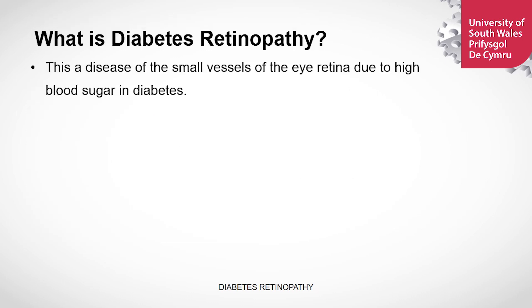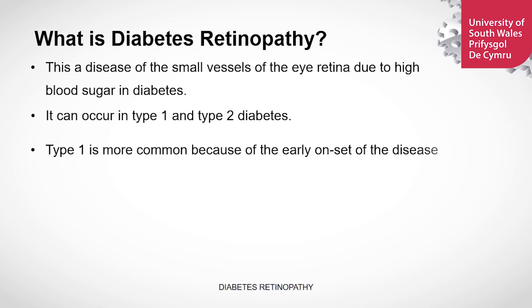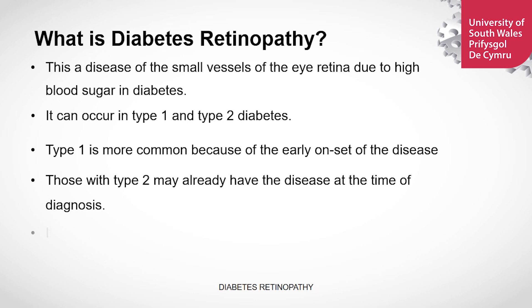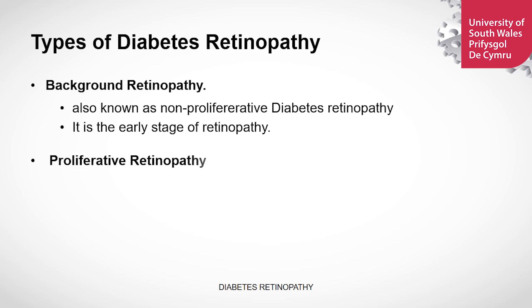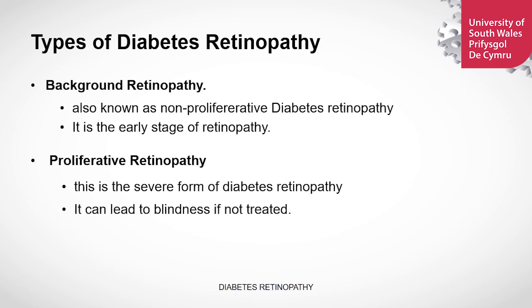Diabetic retinopathy is a disease affecting the small vessels to the eye retina. Due to high blood sugar, it can occur in both type 1 and type 2 diabetes. However, in type 1 it is more common because of the early onset of the disease. In type 2 diabetes, it can be diagnosed at the time the patient appears for the first time for diagnosis. It is a leading cause of blindness among these patients. There are two types of diabetic retinopathy. One, we have the background retinopathy, also referred to as non-proliferative diabetic retinopathy. This is a milder form. The second type is proliferative diabetic retinopathy. This is a more severe form, occurs much later, especially when the sugars are not well controlled, and it is a leading cause of blindness in diabetic retinopathy.